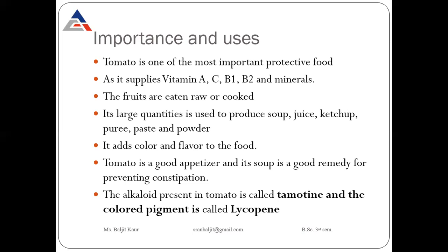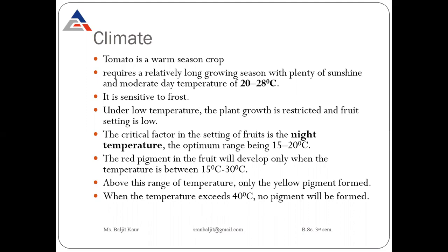The alkaloid present in tomato is called tomatine and the red colored pigment is due to lycopene. So red color in tomato is due to the presence of lycopene as pigment, and the alkaloid present in tomato is tomatine. Tomato provides many vitamins and minerals and adds flavor to our food.